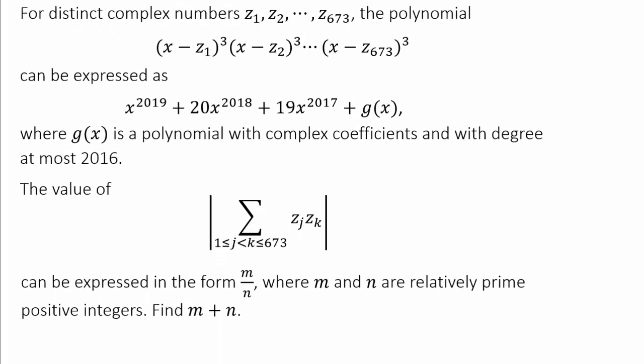So that's one interesting feature right away. The polynomial, this polynomial, can be expressed as x to the 2019 plus 20x to the 2018 plus 19x to the 2017 plus g of x, where g of x is a polynomial with complex coefficients and with degree at most 2016.